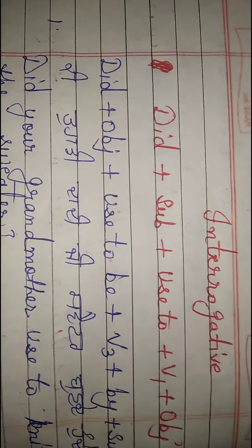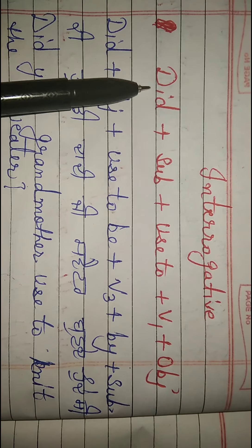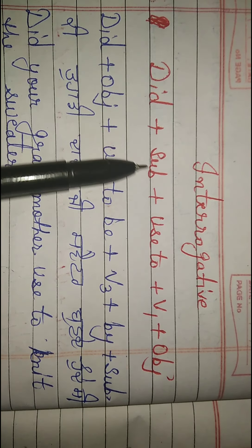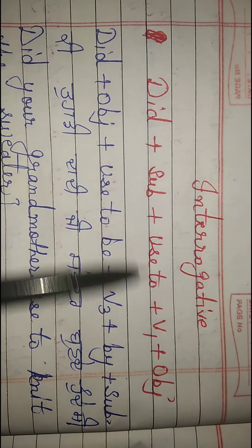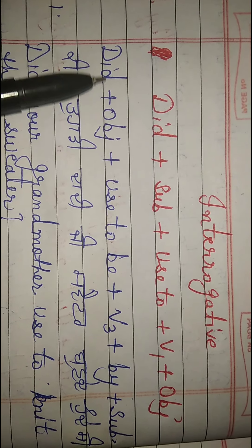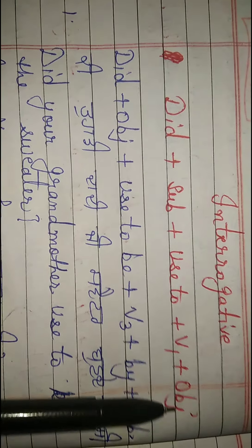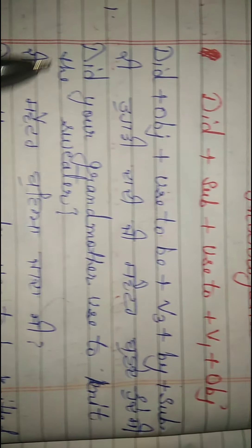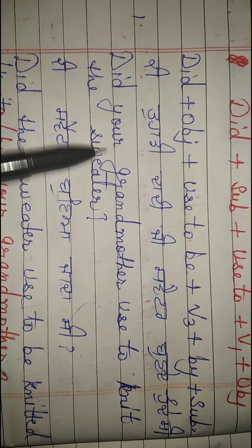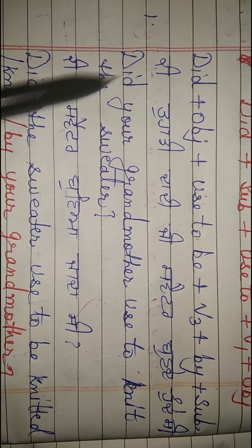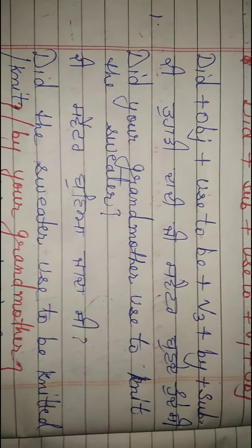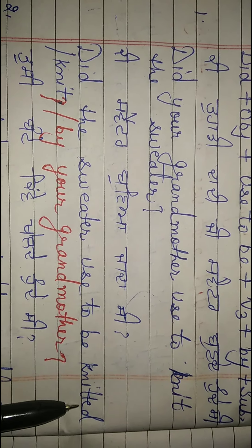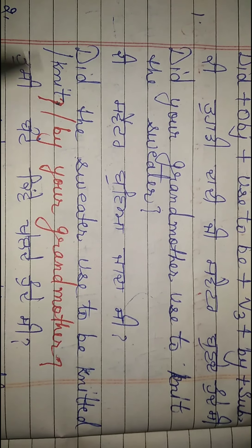Now the interrogative structure. In the interrogative, the helping verb moves to the front. The structure is: Did + subject + use to + verb (first form) + object? For passive: Did + object + use to be + verb (third form) + by subject? For example: 'Did your grandmother use to knit the sweater?' Passive: 'Did the sweater use to be knitted by your grandmother?'